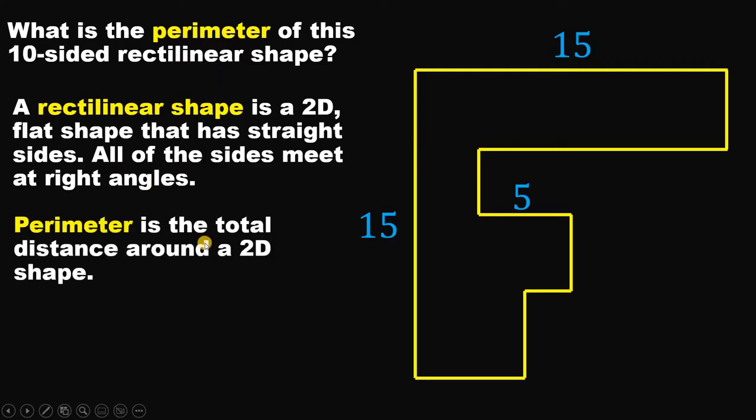We know the perimeter — the perimeter is the total distance around a 2D shape, or the sum of all sides of a polygon.